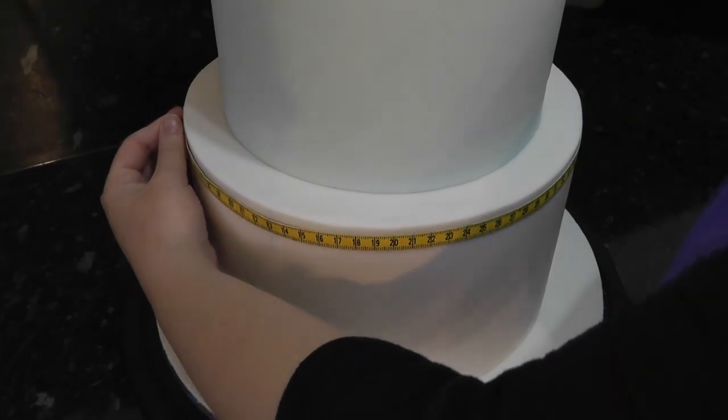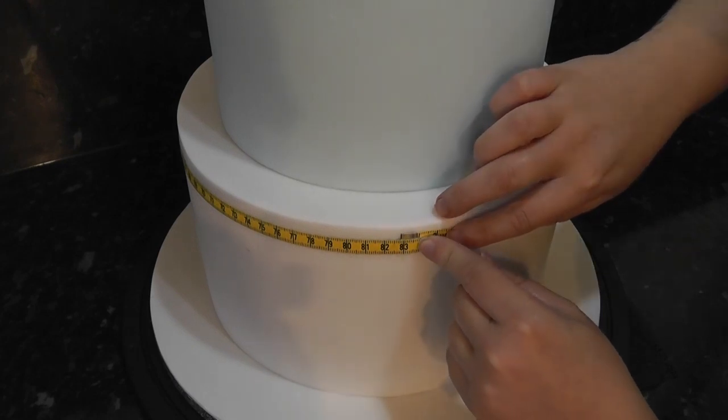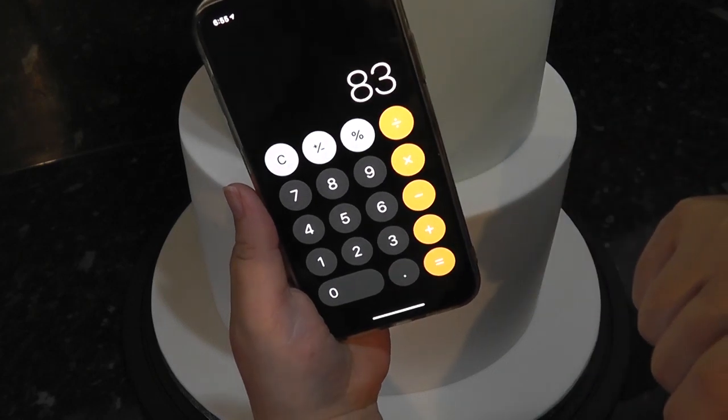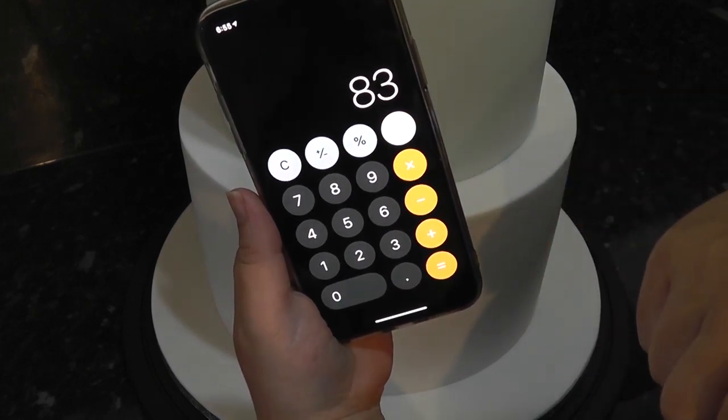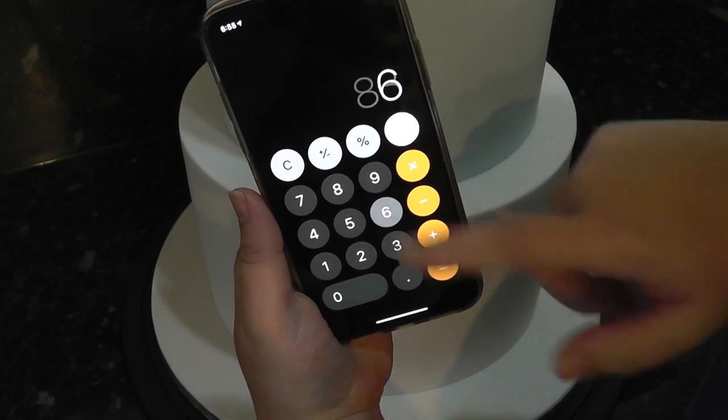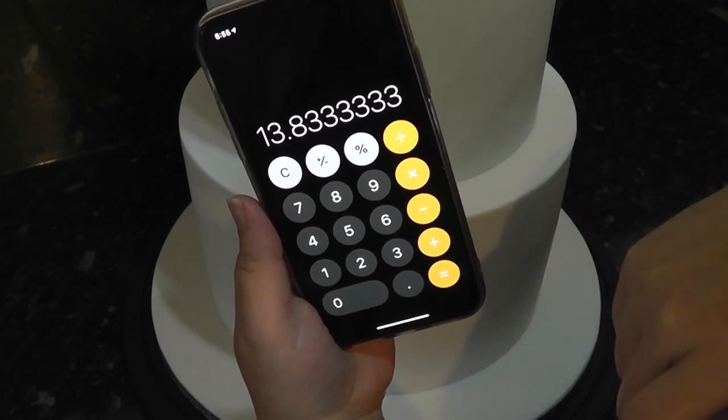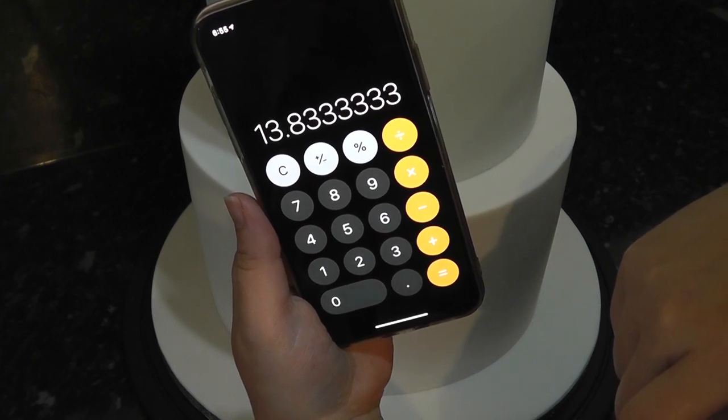Measure the circumference of the bottom tier, mine comes to 83cm. Punch in your measurement on a calculator and then divide it by how many scallop shapes you want. I am going for 6. This tells me each scallop needs to be 13.8cm to go around almost seamlessly.